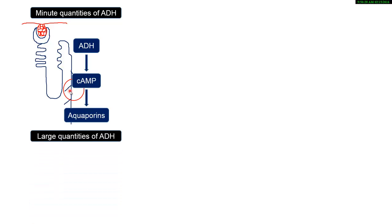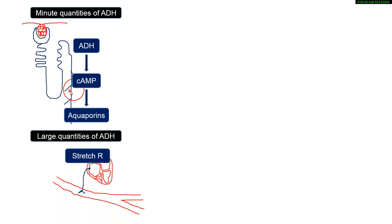Anti-diuretic hormone also has a second biological effect, which is why it is also called vasopressin — meaning it presses the vessels and causes vasoconstriction. This involves stretch receptors within the right atrium.